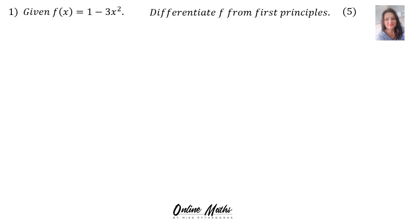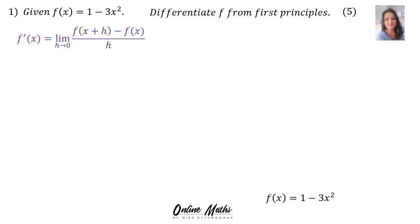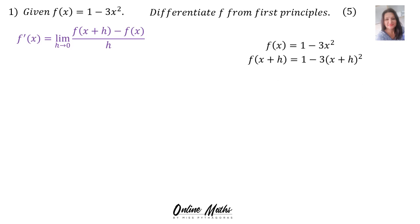Let's do the question. Question 1: given f of x is equal to 1 minus 3x squared, differentiate f from first principles. When you do first principles, that's the formula you will use, and remember the formula is on the formula sheet. On the right-hand side, you have to find f(x plus h) — that means everywhere you see an x, you substitute x plus h. You have to wait with the 1 minus 3.